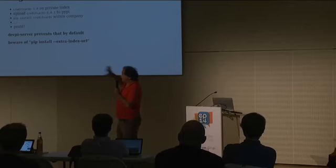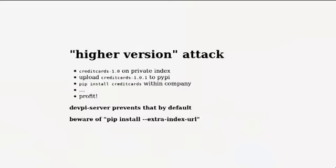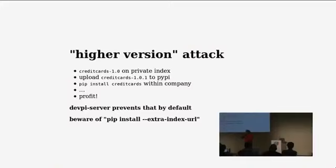This is also a problem if you forget about DevPI server and use pip install with extra-index-url, because then the merging is done on the client side and it does exactly that — it takes the higher version. So you thought you installed something from your private index, but you're actually installing something from PyPI.